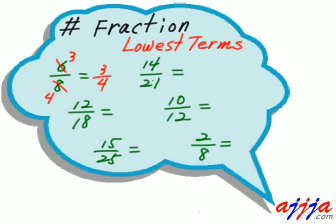How about this one: fourteen over twenty-one. You know right away the seven goes into fourteen twice and into twenty-one three times. That's it — two over three.